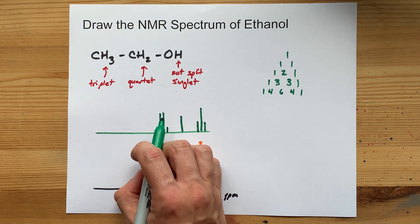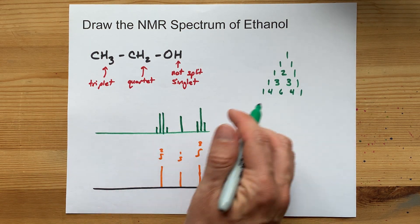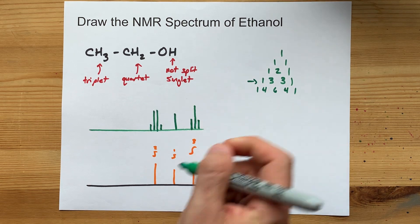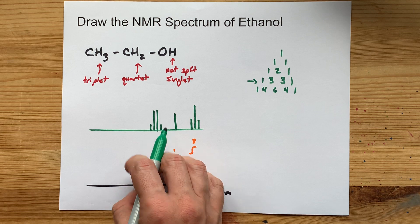What I mean is that these two middle ones in the quartet, quartet means four, these should be triply as tall as these, because it's a 1 to 3 to 3 to 1 ratio.